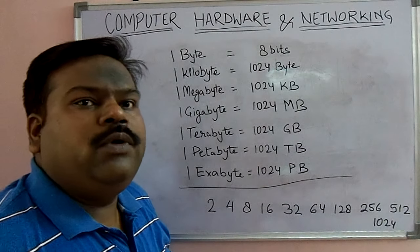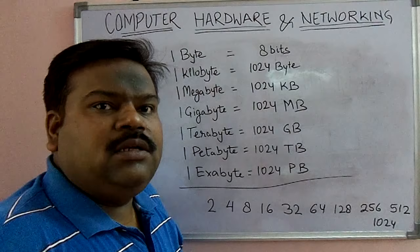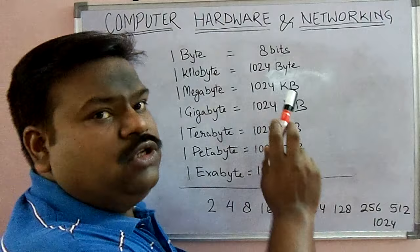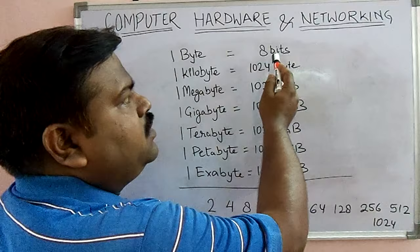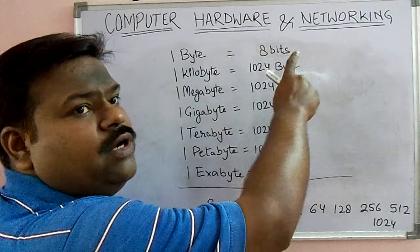Our computer understands the digital binary number system, that is 0 and 1. When 8 bits are combined they become 1 byte — 1 byte is equal to 8 bits.